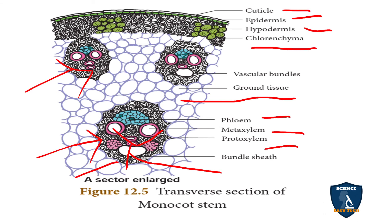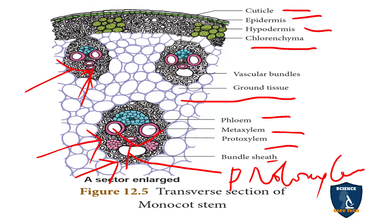Each vascular bundle is surrounded by a bundle sheath made up of sclerenchyma cells. In mature vascular bundles, the protoxylem disintegrates and forms the protoxylem lacuna. The mature bundles are found in the middle of the stem and the young bundles are in the periphery near the epidermal region.